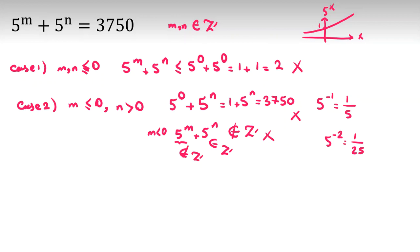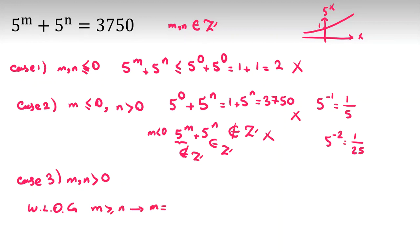So we conclude both m and n must be positive. Without loss of generality, suppose m is greater than or equal to n. We can write m as n plus k, where k is a non-negative integer.